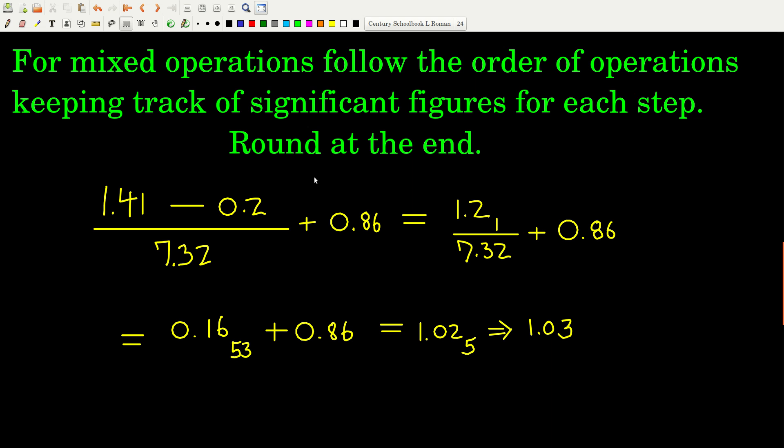We're assuming all of these numbers came from measurements, so they're written to the correct number of significant figures. So we have 1.41 minus 0.2 divided by 7.32 plus 0.86. So the order of operations says we have to do the subtraction on top of the division first.